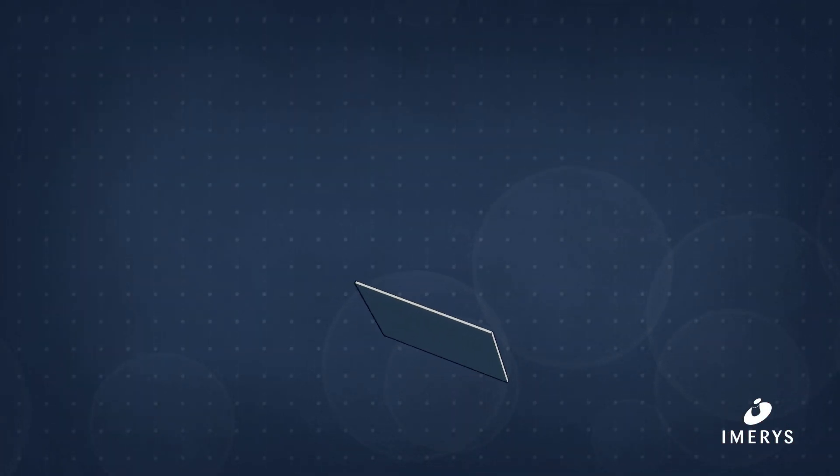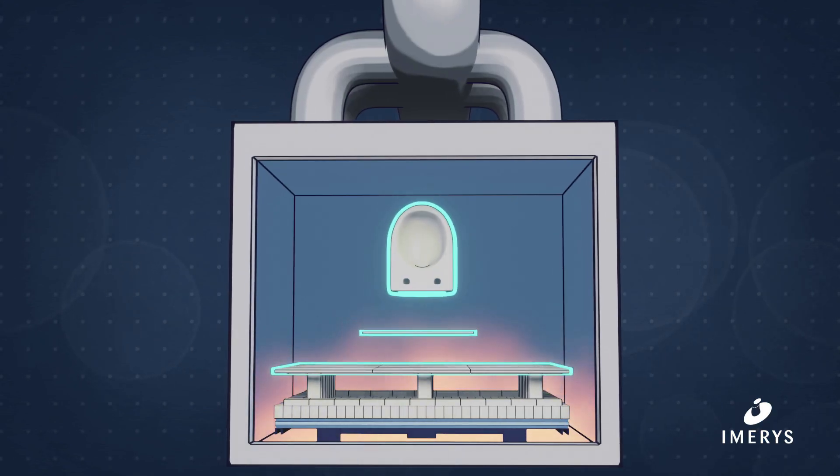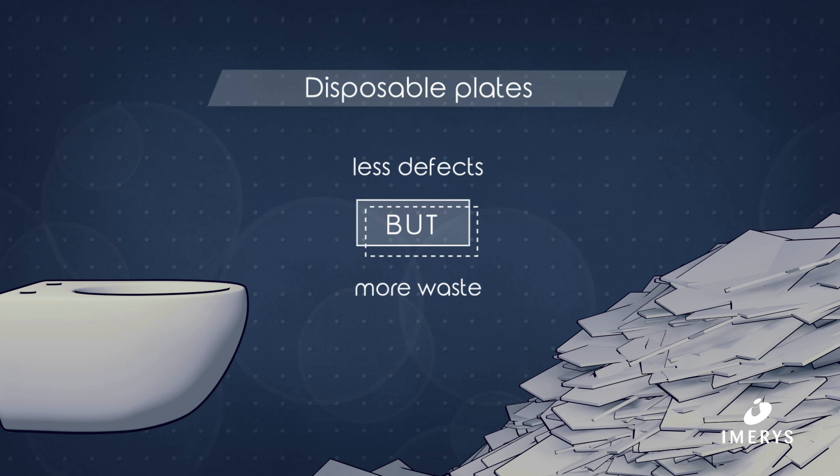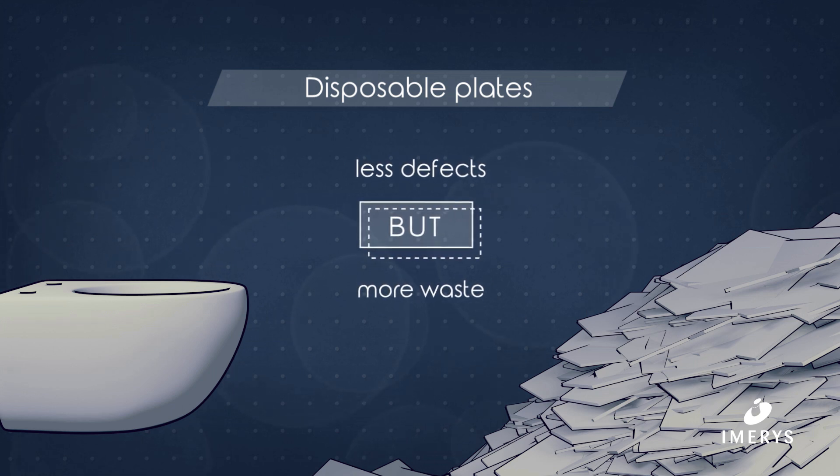To reduce these defects, disposable plates are positioned between the piece and the kiln furniture. Although this solution does effectively limit friction, it also increases waste.